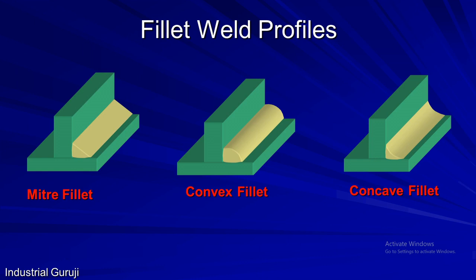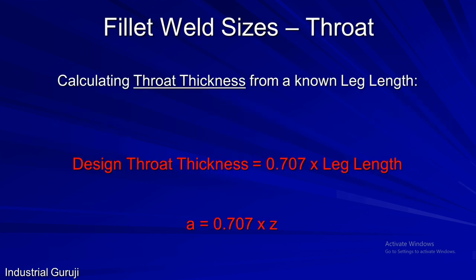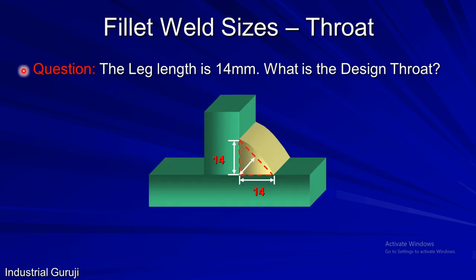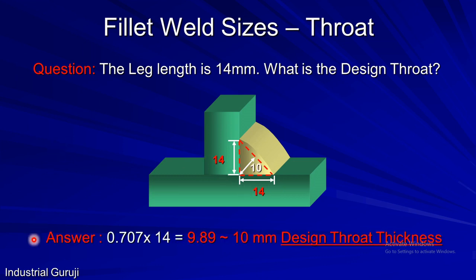We have seen terms and dimensions regarding fillet welds; now we will see the relations between them. Many times we know leg length but throat is unknown, such as on drawings which only show one dimension. Design throat can be calculated by the formula: design throat thickness equals 0.707 multiplied by leg length, that is A = 0.707 × Z. For example, if leg length is 14 mm, then design throat = 0.707 × 14 = 9.89, approximately 10 mm.